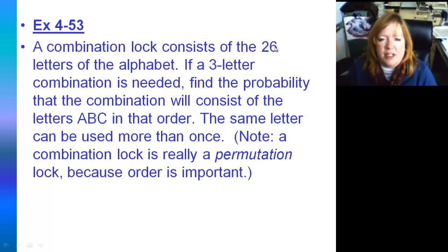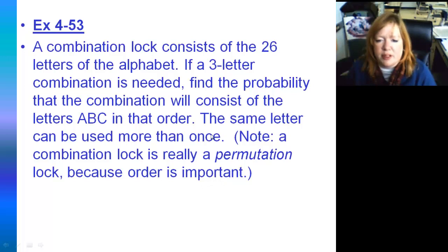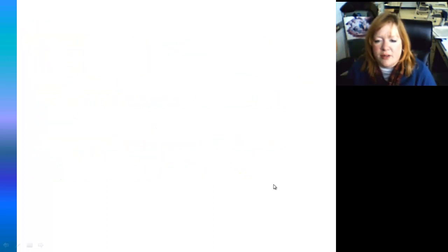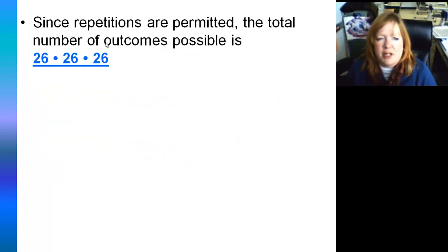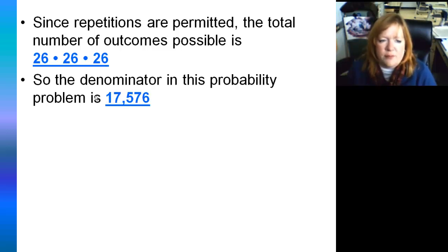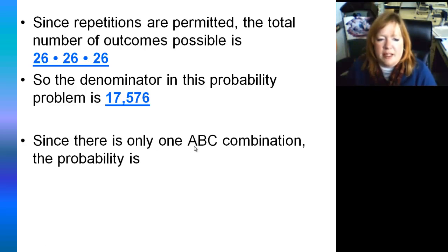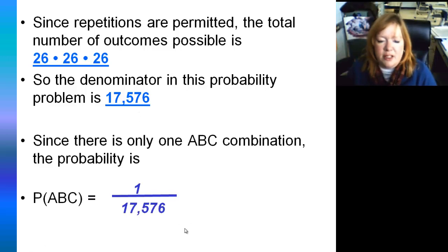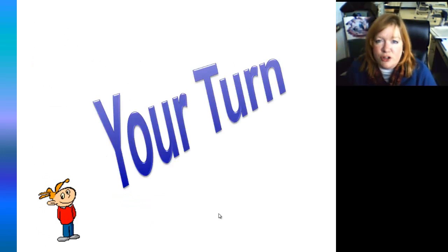Last but not least: a combination lock consists of 26 letters of the alphabet, and a three-letter combination is needed. Find the probability that the combination will consist of the letters ABC in that order. The same letter can be used more than once. Note that a combination lock is really a permutation lock because order is important, and repetitions are permitted. So the total number of outcomes is 26 times 26 times 26, which equals 17,576. There's only one ABC combination, so the probability is one out of 17,576. It's your turn to do these probability problems — I'll be checking the last two problems on your notes. See you tomorrow.